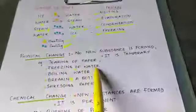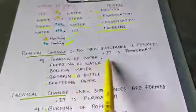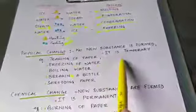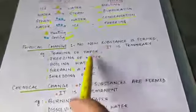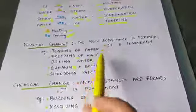Physical changes can be reversible or irreversible. Tearing of paper cannot be reversed. Freezing of water can be reversed — once you freeze water it changes to ice, but that ice can change back to water on heating, so it is reversible. In both cases, no new substance is formed. That is physical change.